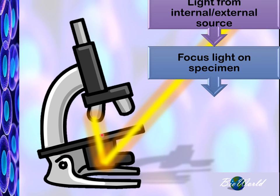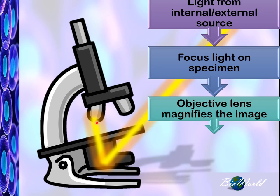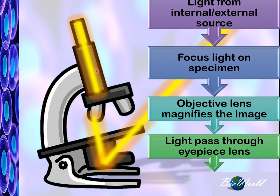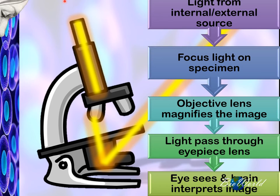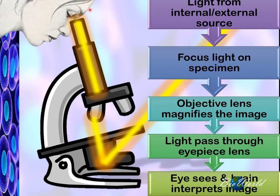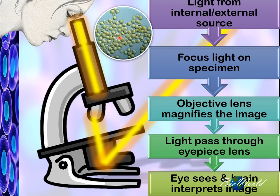The light then touches the objective lens, where the objective lens will magnify the image and pass the light on to the eyepiece lens. When we look into the eyepiece lens, whatever we see is interpreted into an image by our eye.